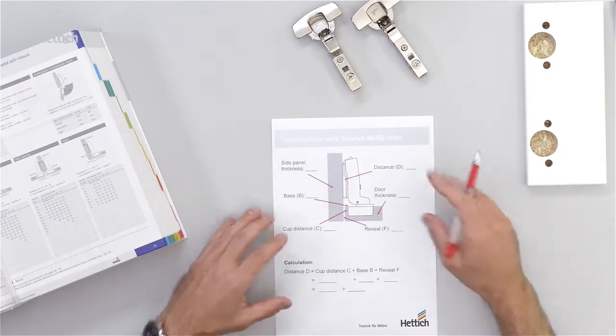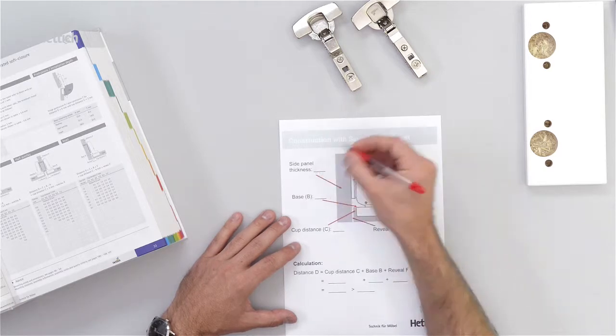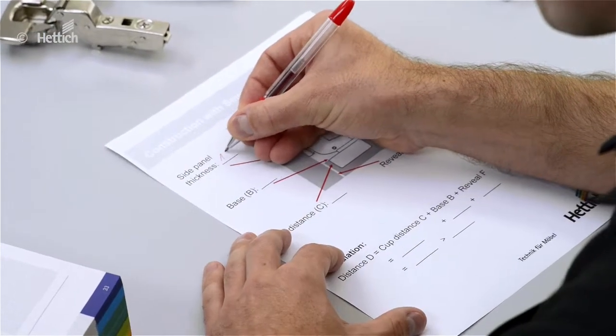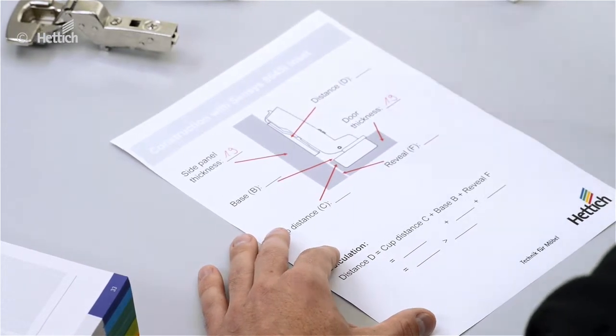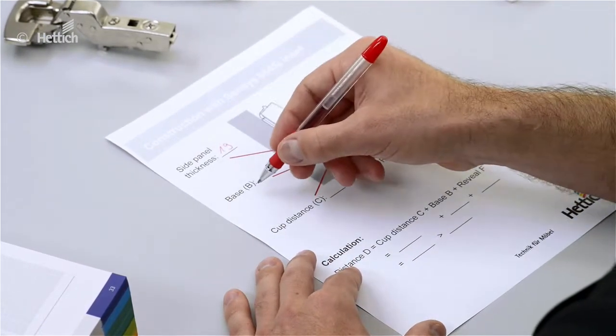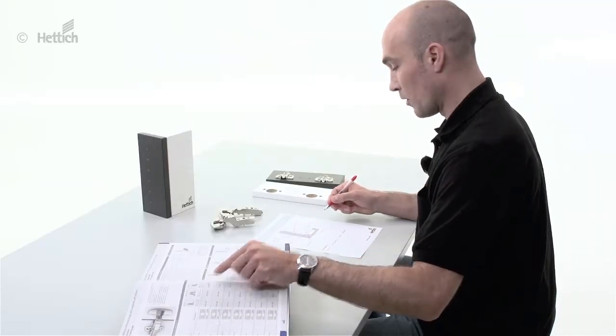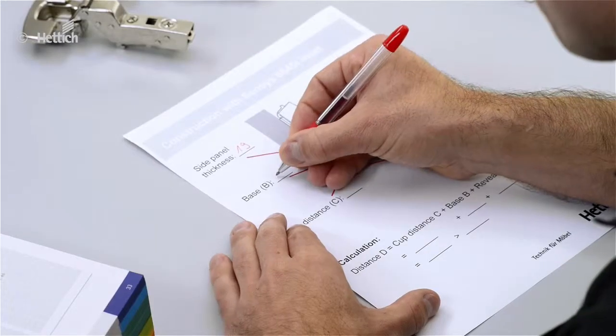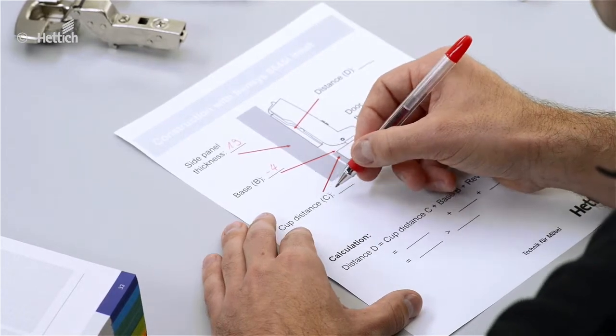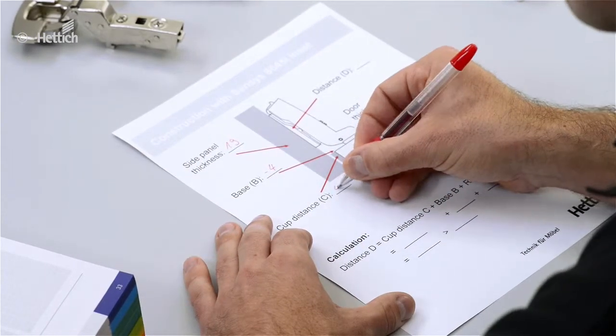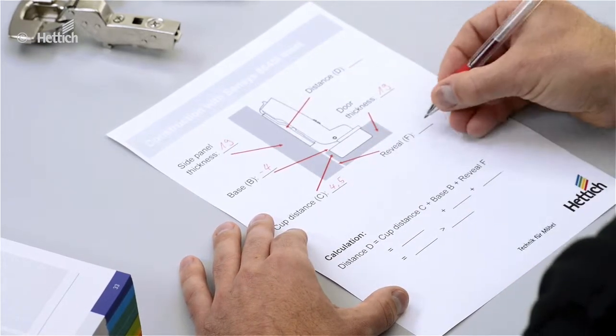So we go to the calculation sheet. The side panel thickness is given, 90 millimeters in this example. Also the door thickness with 19 millimeters. We have the base B with a value of minus 4 millimeters you can see in the catalog. The cup distance C is 4.5 millimeters in this example and the reveal is 2 millimeters.